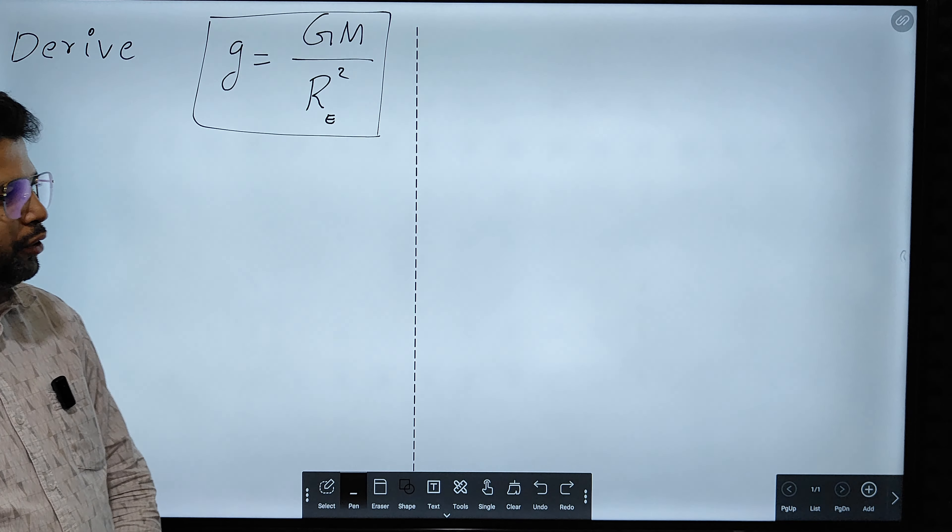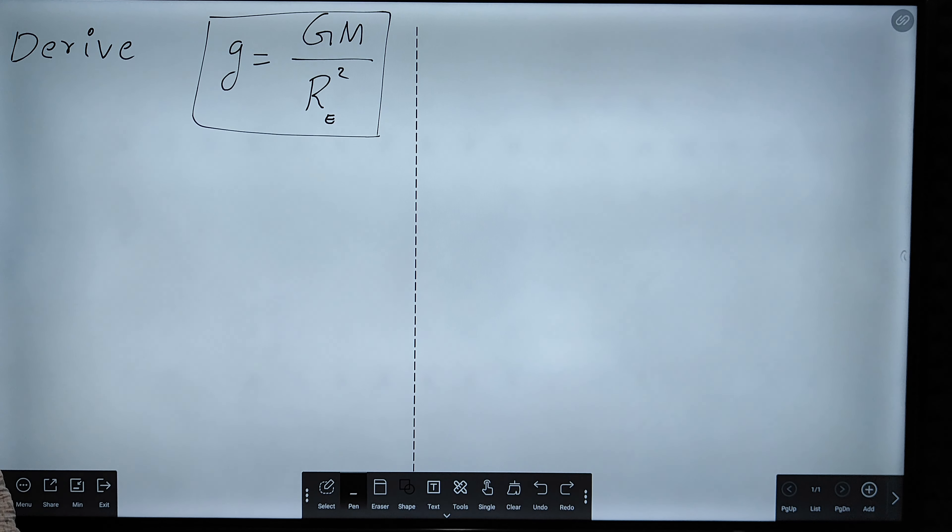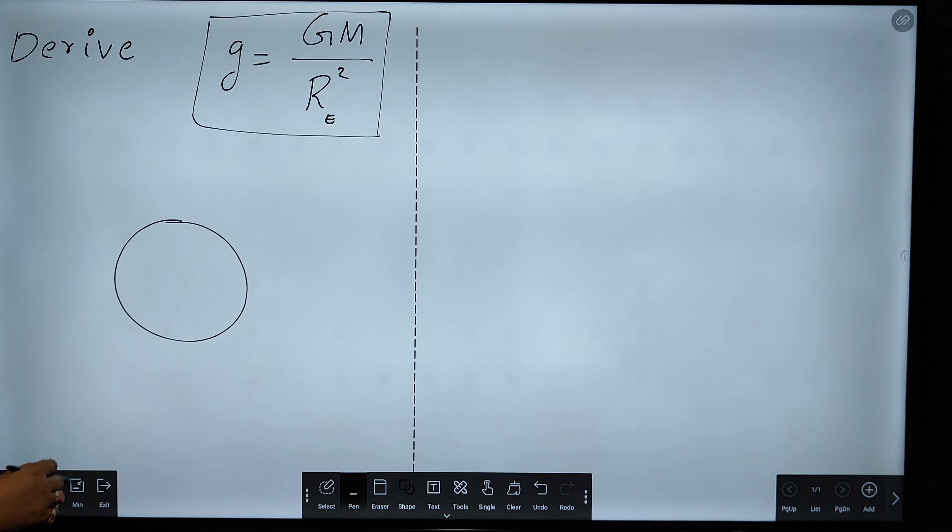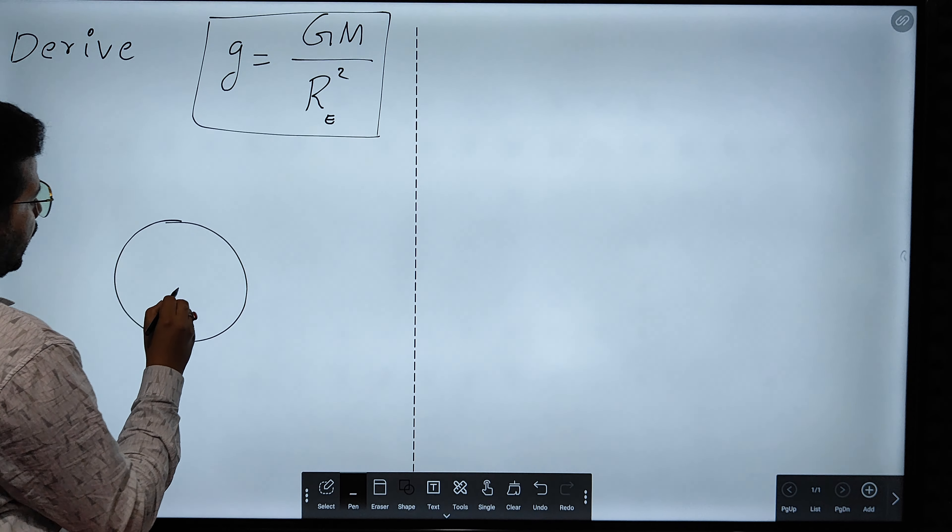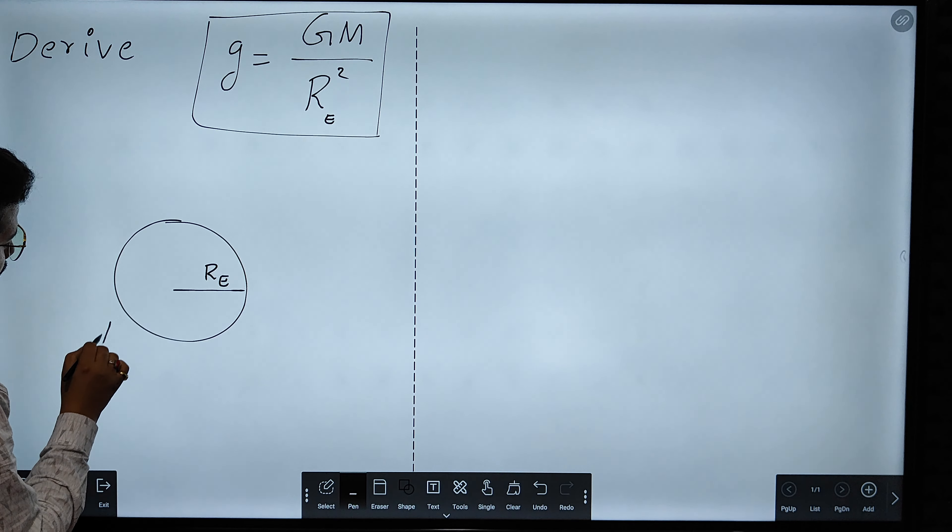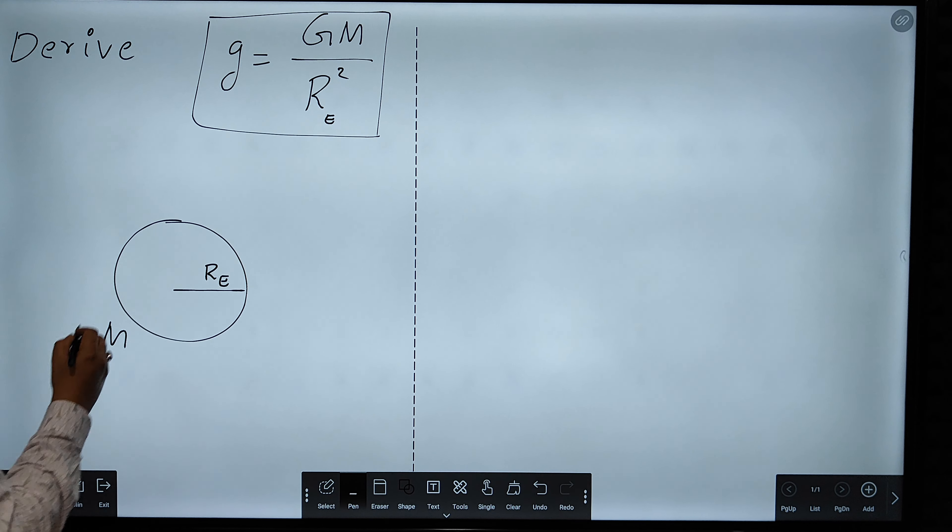Hello everybody, in this session we are going to derive the equation g is equal to GM by R square. First, what we will do is, let us suppose that this is Earth, and the radius of Earth is Re, mass of the Earth is M.